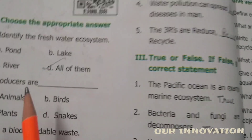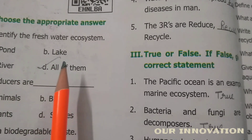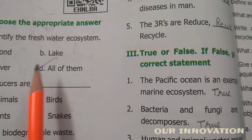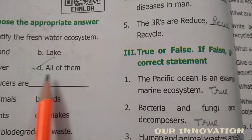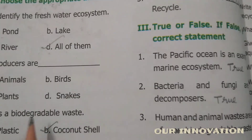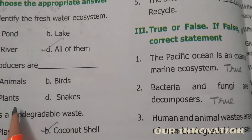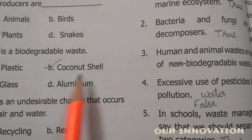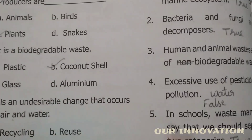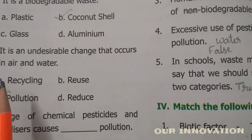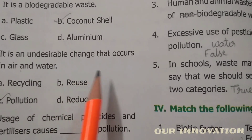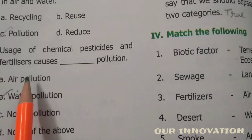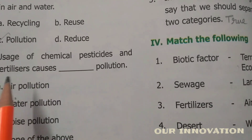Roman numeral one — choose the appropriate answer. Identify the fresh water ecosystem: pond, lake, river — all three are fresh water ecosystems, so the answer is 'all of the three.' Producers are plants. It is a biodegradable waste — coconut shell. The remaining options are all non-biodegradable. An undesirable change that occurs in air and water is called pollution.